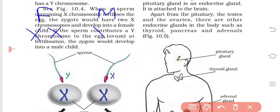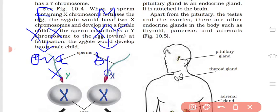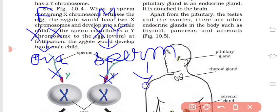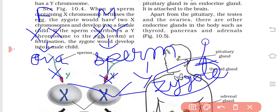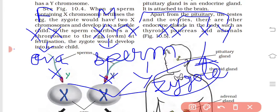So to confirm: female is XX and male is XY. The egg (ovum) will always be X, but the sperm can be either X or Y. When the egg and sperm fuse together, a zygote is formed. Whether the zygote becomes male or female depends entirely on which chromosome the sperm carries — X or Y.